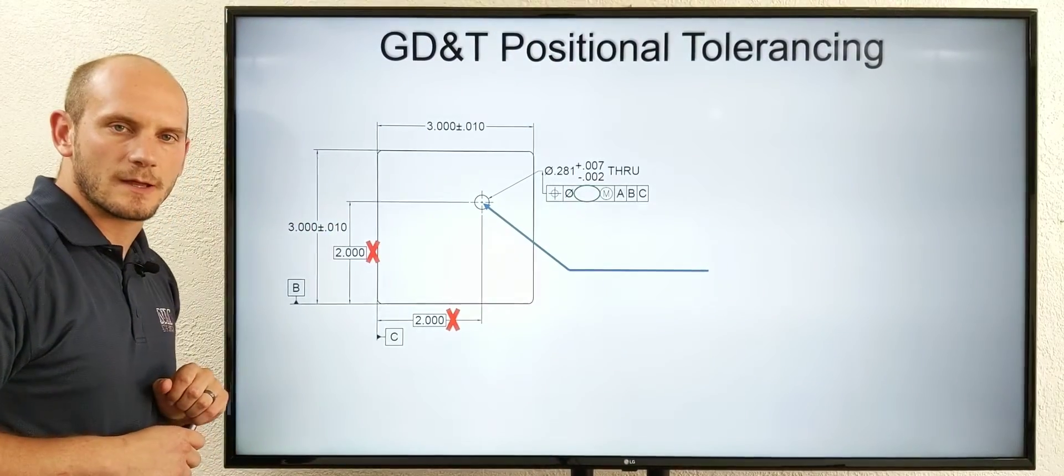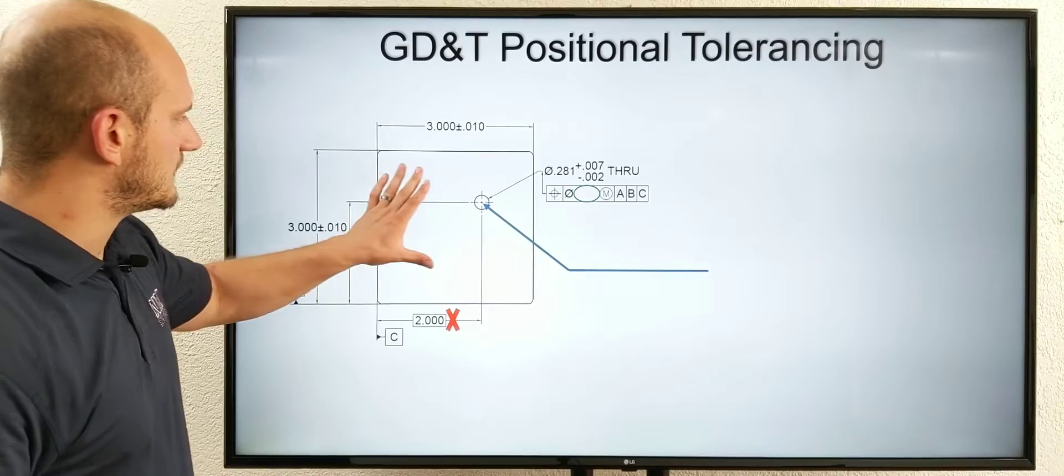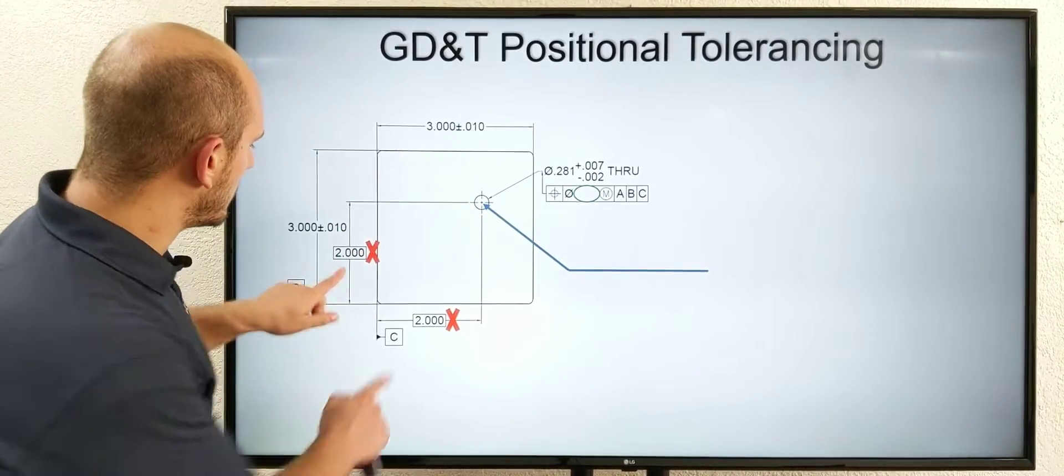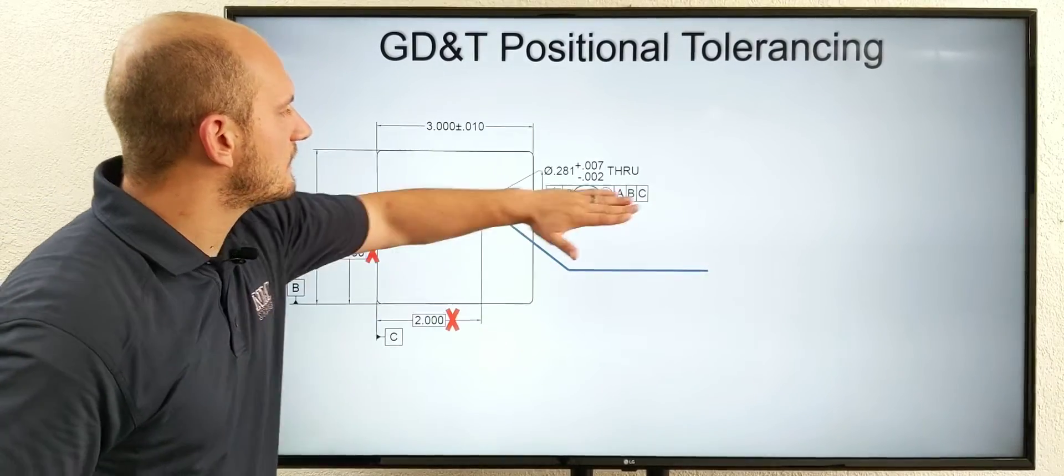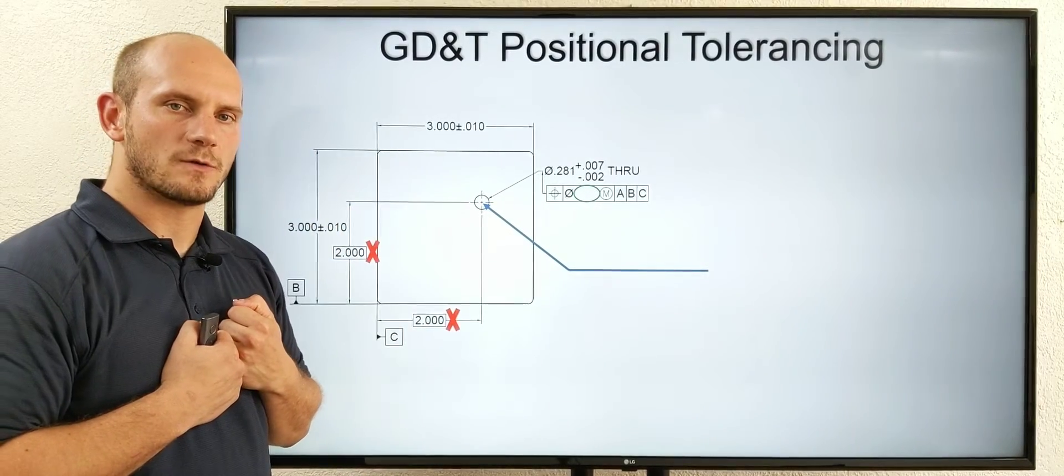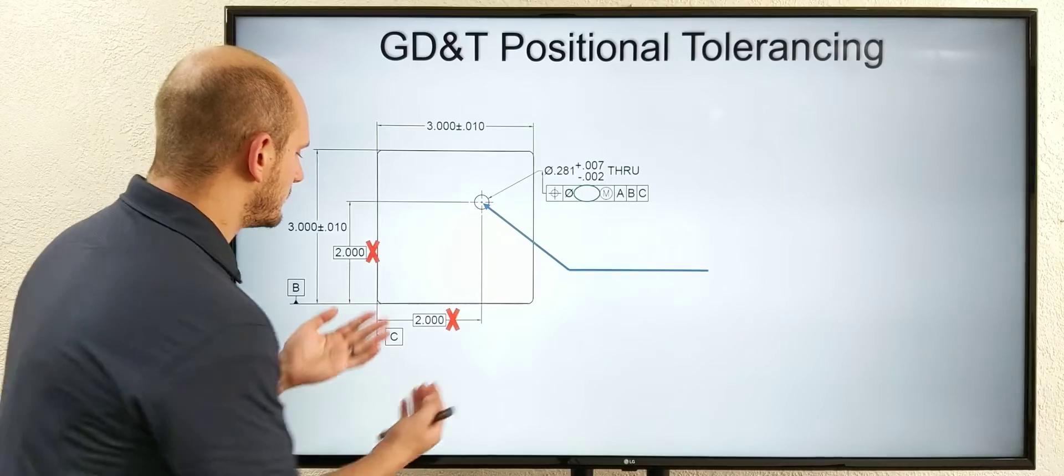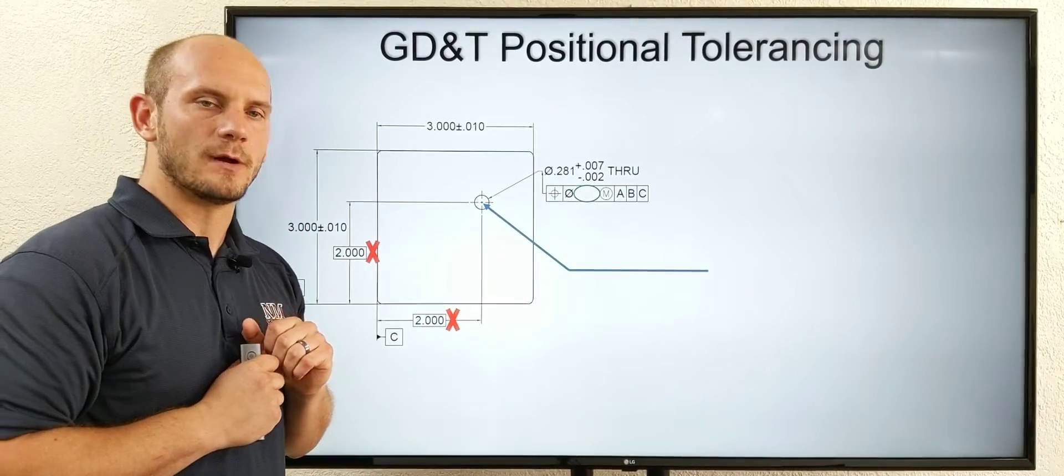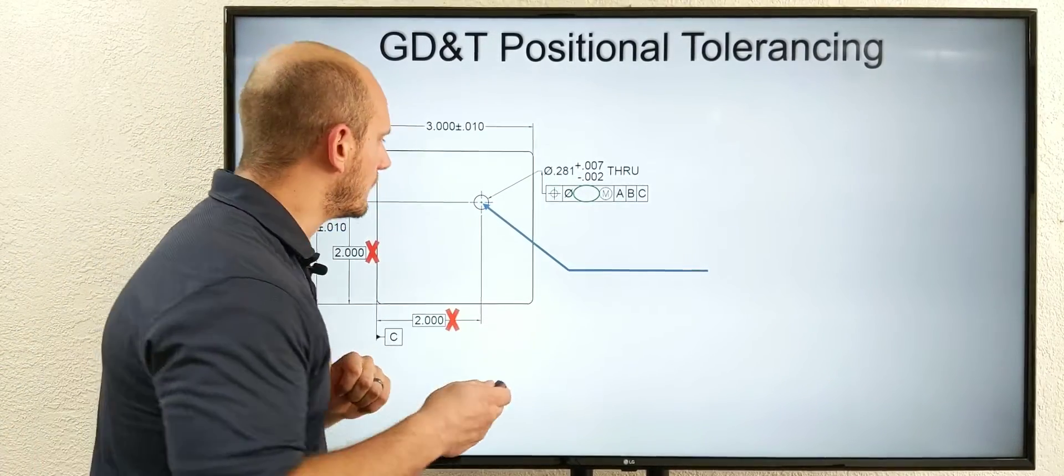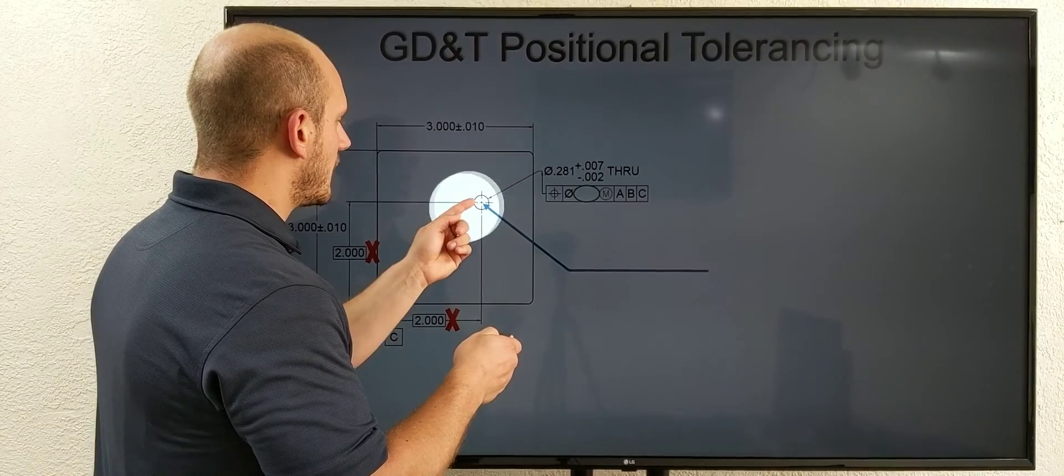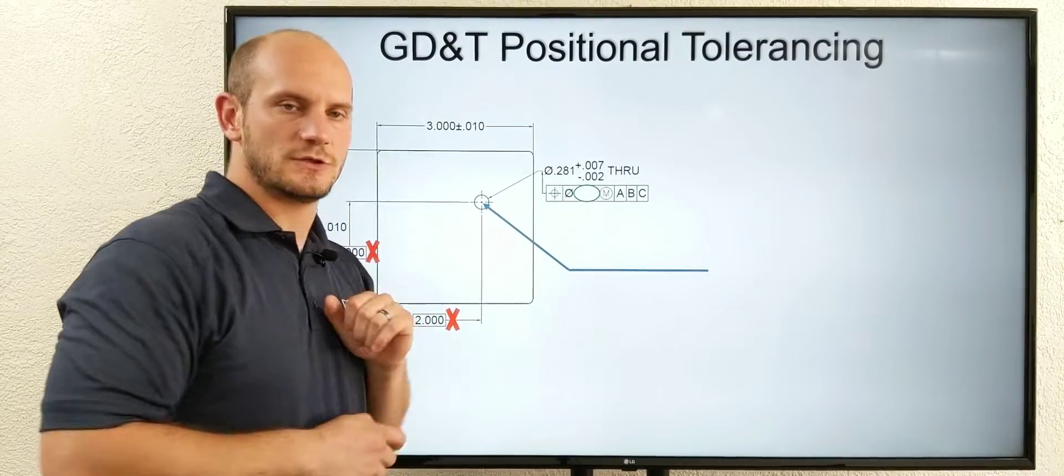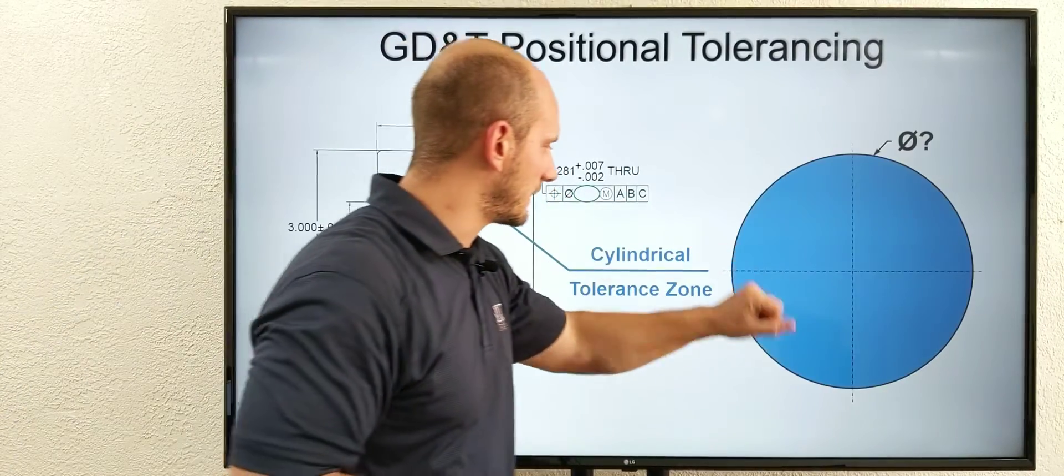Let's look at GD&T positional tolerancing. Again, I've got my simple part - a flat plate with a simple hole. I've got my location dimensions here and here, then my hole callout. You'll notice I've taken that location tolerance away from the machinist, and since I've taken it away, I have to give it back somewhere. I do that using this GD&T position tolerance. If we zoom in and look at the shape and size of the tolerance zone we're invoking by using this GD&T position tolerance, it would look just like this.